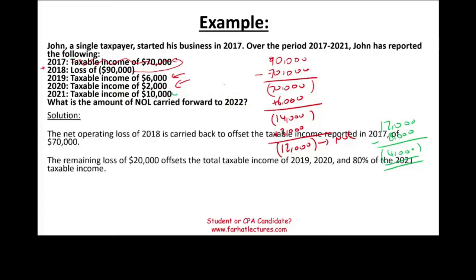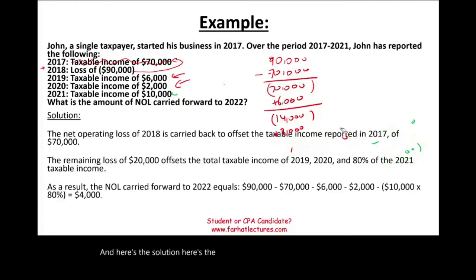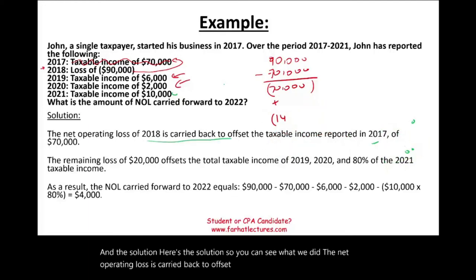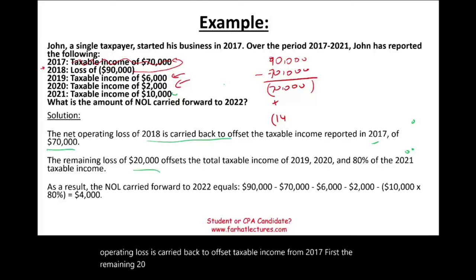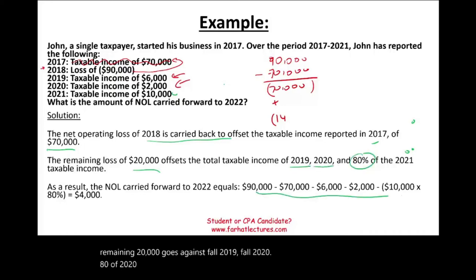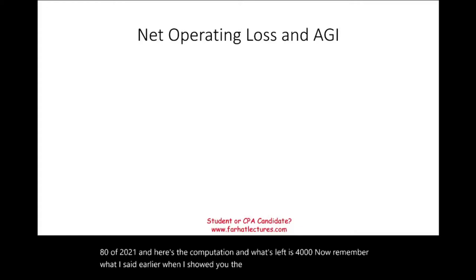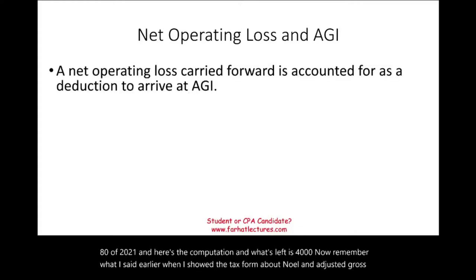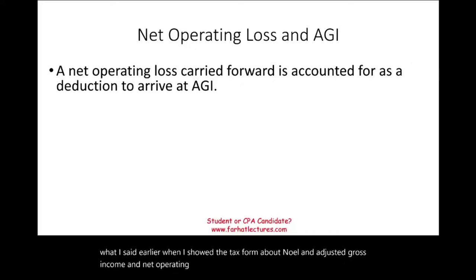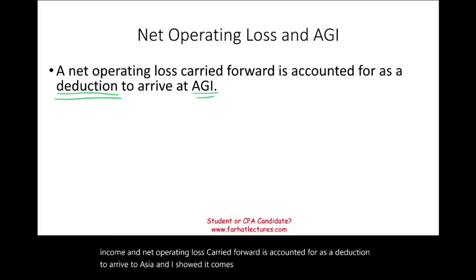Here's the solution. The net operating loss is carried back to offset taxable income from 2017 first. The remaining $20,000 goes against 100% of 2019, 100% of 2020, and 80% of 2021. The remaining balance is $4,000. Remember what I said earlier about NOL and adjusted gross income: the net operating loss carried forward is accounted for as a deduction to arrive at AGI — it comes before AGI.